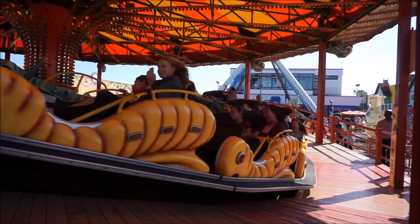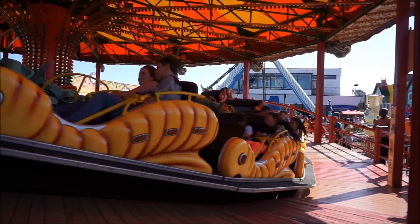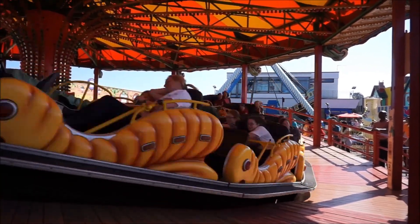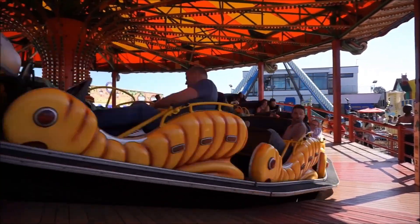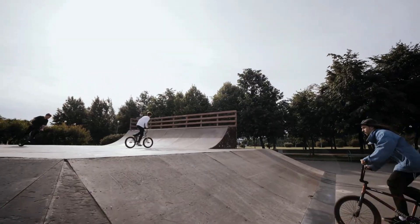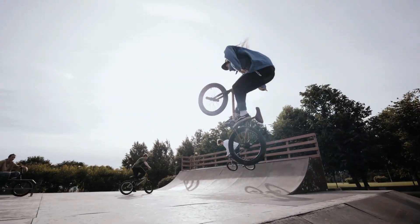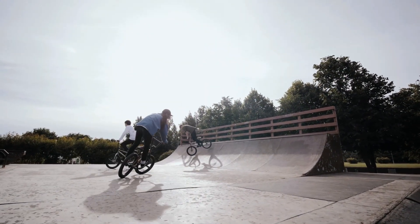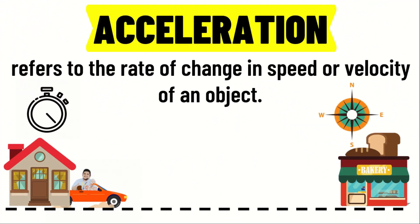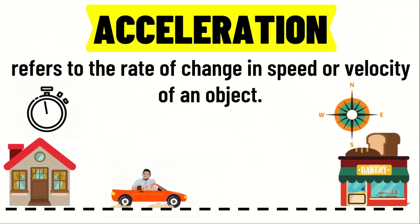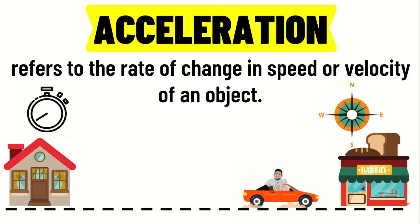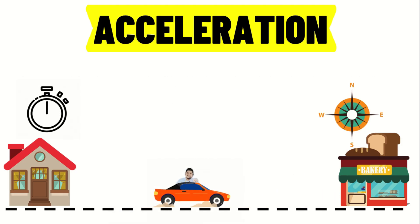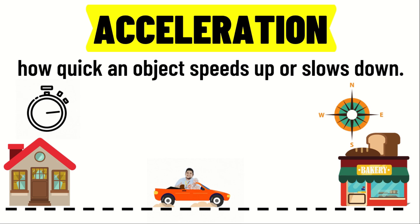In reality, objects do not always move at a constant velocity. Objects do change their speed, directions, or both. When objects change their speed or velocity, they are said to be accelerating. Acceleration refers to the rate of change in speed or velocity of an object. It gives us an idea how quick an object speeds up or slows down.